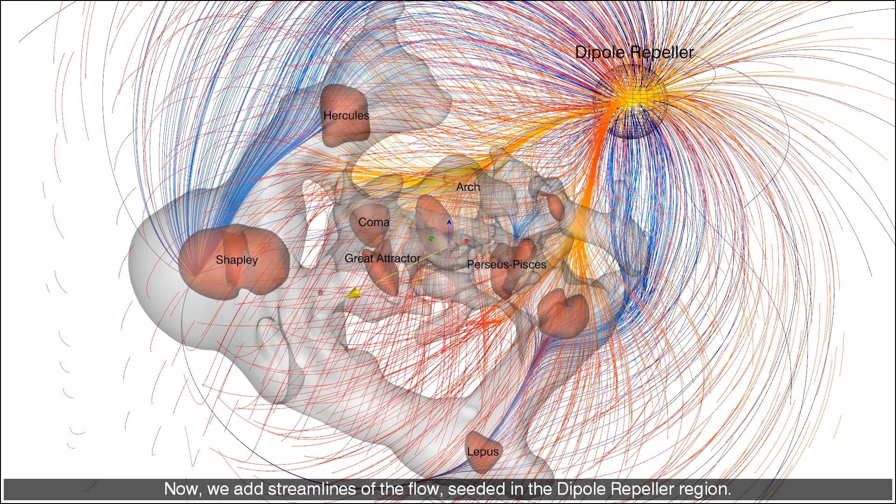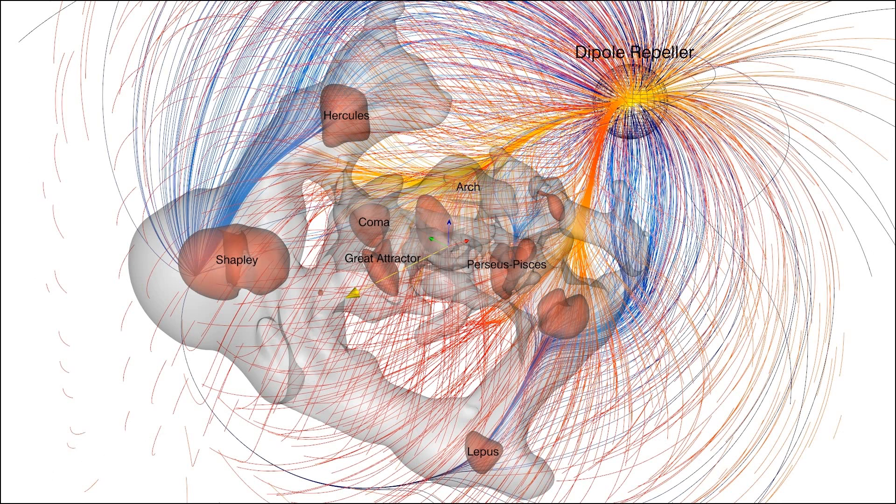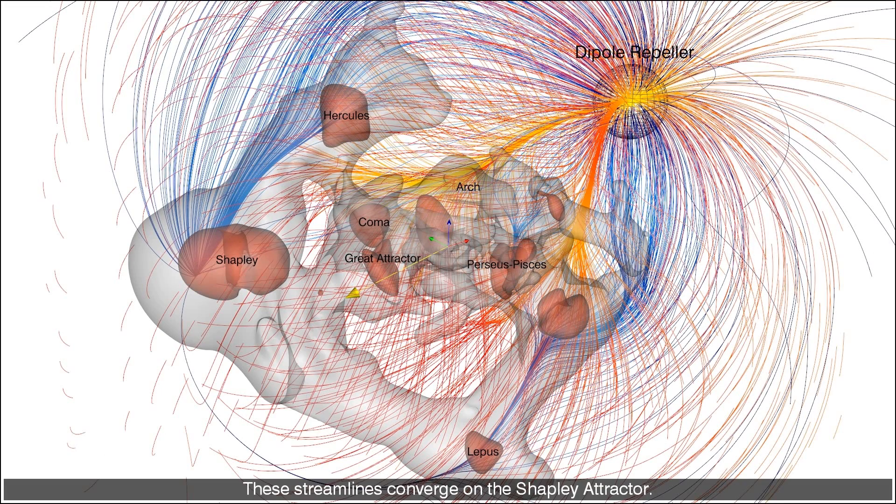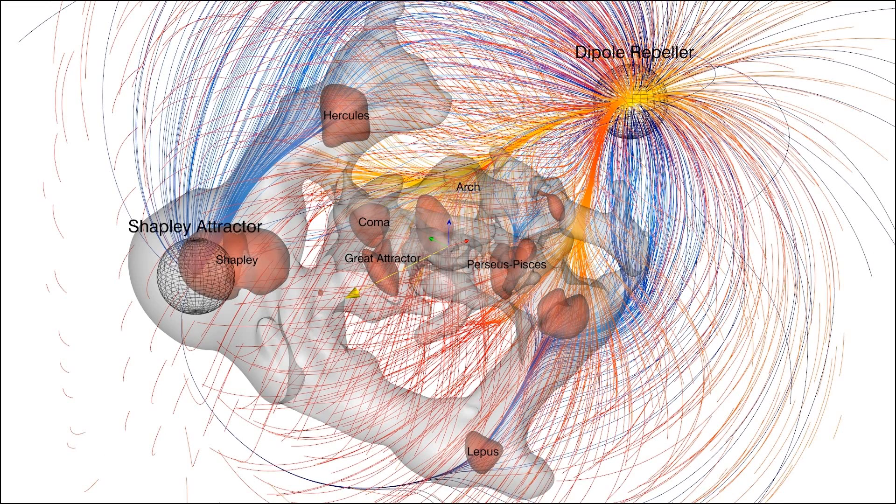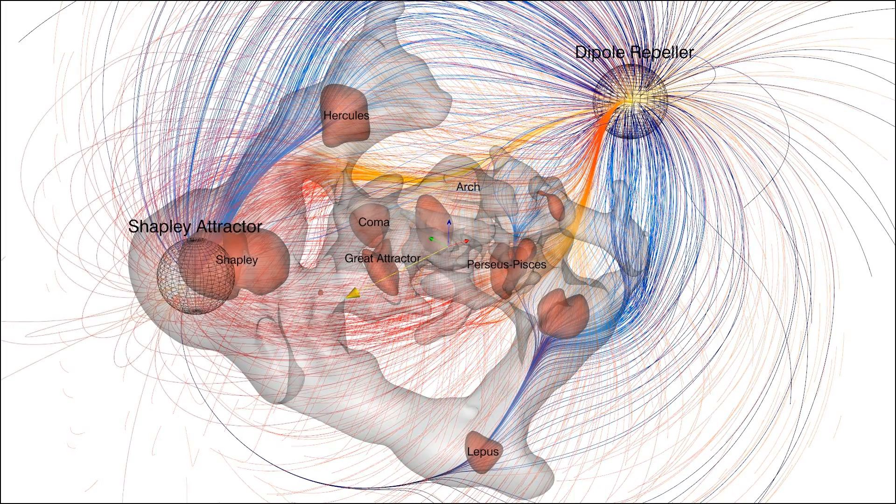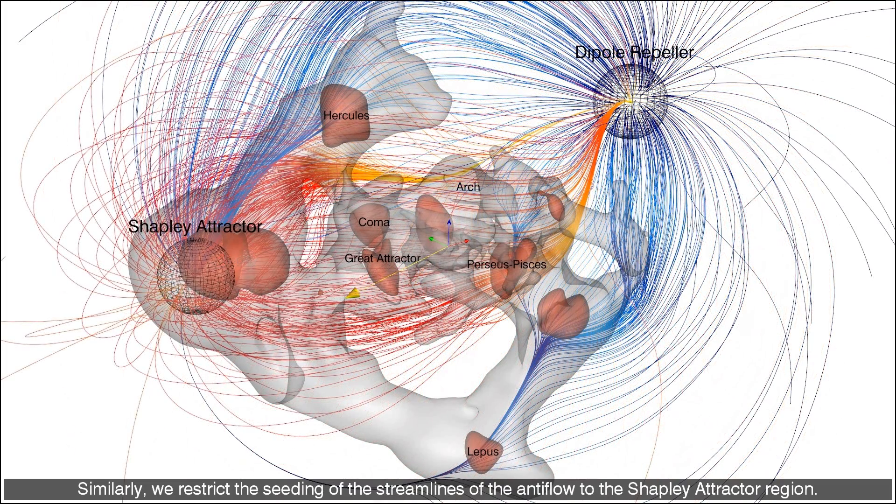Now we add streamlines of the flow seeded in the dipole repeller region. These streamlines converge on the Shapley attractor. Similarly, we restrict the seeding of the streamlines of the antiflow to the Shapley attractor region.